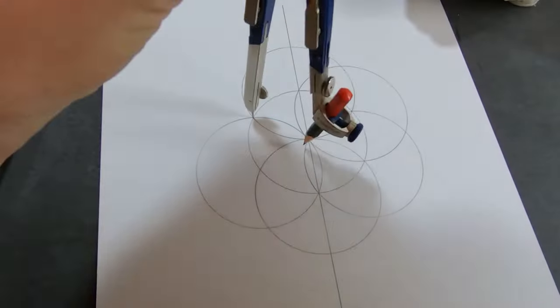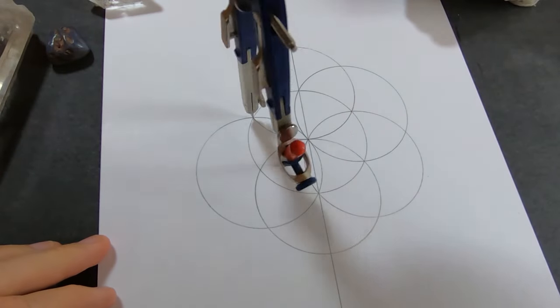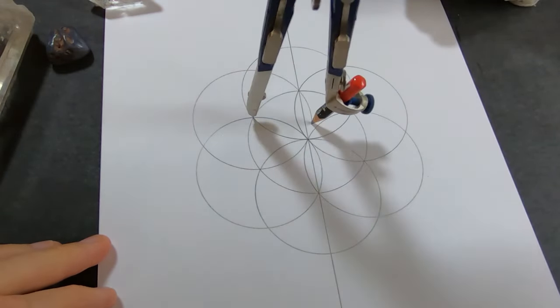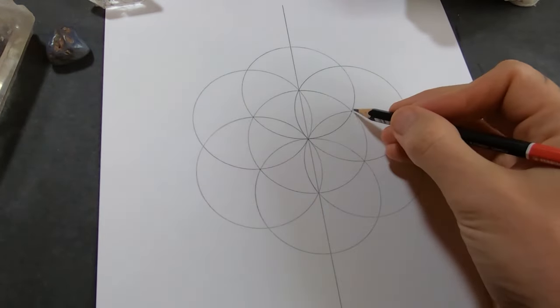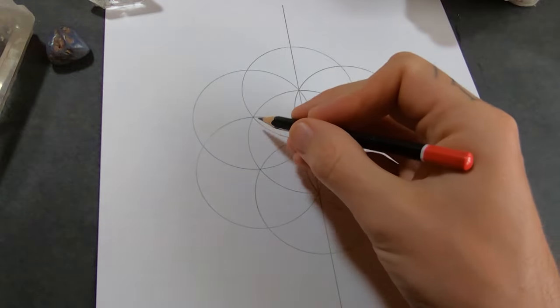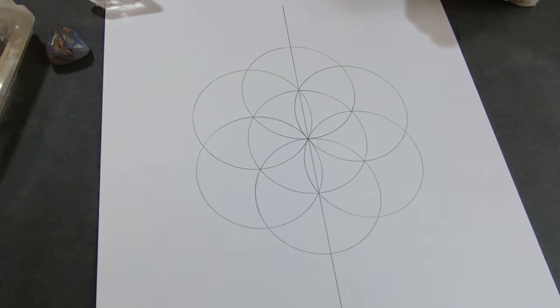As soon as we've got six circles around the center circle, we've got the seed of life. Now we can use the seed of life to find the inverted triangle in the center. You just have to connect these three points, the tips of these petals.